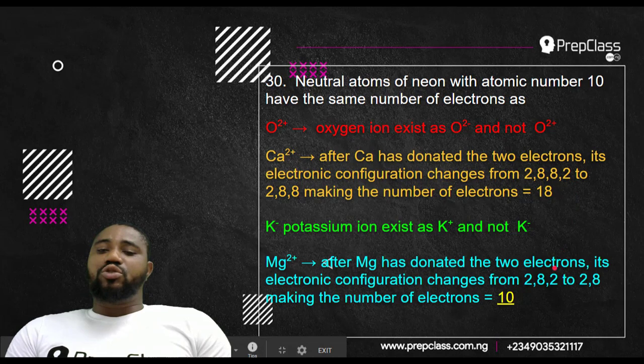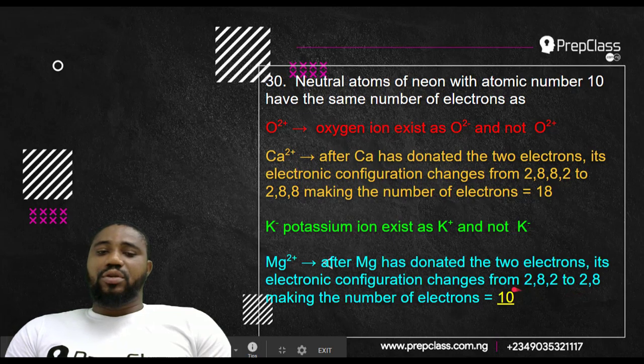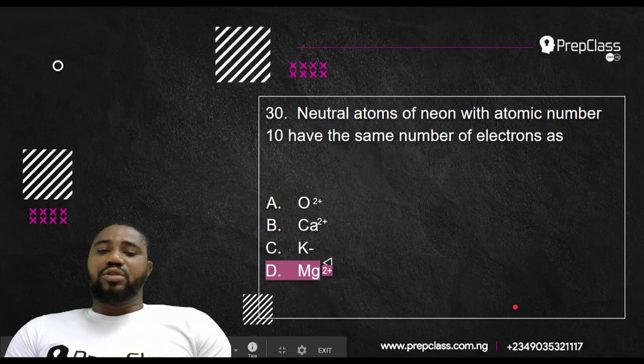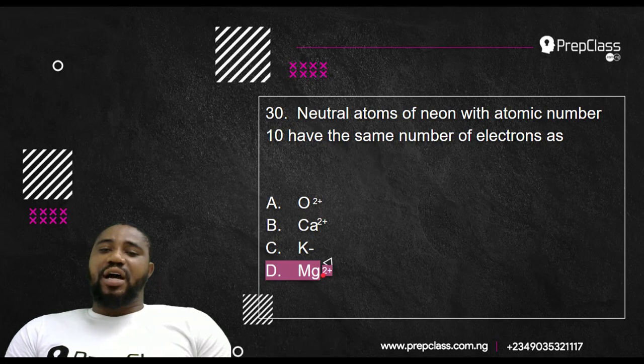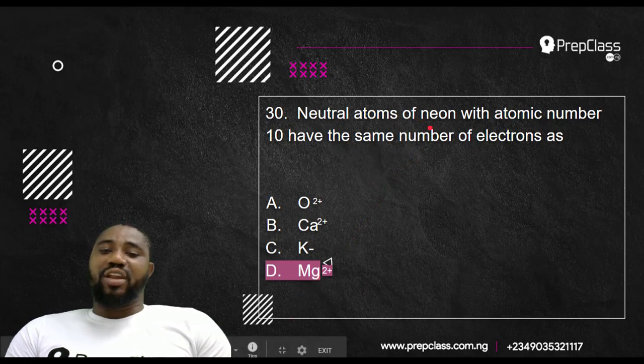Magnesium can donate these two electrons, just like calcium can donate these two electrons. So when magnesium donates these two electrons, it becomes Mg2+. And when it does that, the electronic configuration now changes from 2, 8, 2 to 2, 8. So making the number of electrons to be 10, because 2 plus 8 will give you 10. So because of that, the correct answer is magnesium. Mg2+ will have the same number of electrons with atomic number 10.